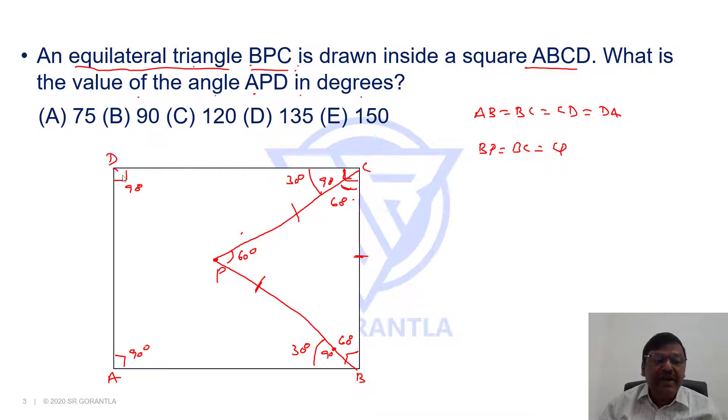Now if I join DP and AP, let me consider triangle CPD. In triangle CPD, CP and CD are equal or not? CP and CD are equal. BC equals CD, BC equals CP. You see, all four sides are equal because it's a square. All these three sides are equal because it's an equilateral triangle. Hence, obviously, these two sides are equal. BC equals CD, BC equals CP means we can say CD equals CP.